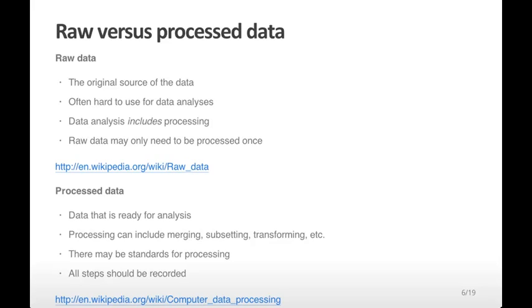Processed data, on the other hand, is data that is ready for analysis. Processing can include merging data sets together, taking subsets of data to make them smaller or to focus on a particular group of objects, by transforming the numbers to make them on a more manageable or correct scale, or dealing with missing data or outliers. There may be standards for processing for particular types of data, and those standards are often used over and over again. But all steps should be recorded because you might do something slightly different in the way that you process the data.